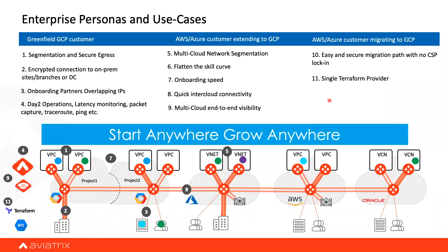I showed you a lot of use cases and it looks complex, but it actually isn't — because when you want to deploy this solution, you don't have to boil the ocean all at once. You can start from a very simple use case: it could just be a hub and spoke architecture, a transit routing use case, or egress FQDN. Then you can grow from there, because everything becomes plug and play once you have this architecture in place. If you need help, talk to us — we'll help you resolve your pain points in GCP or multiple clouds.